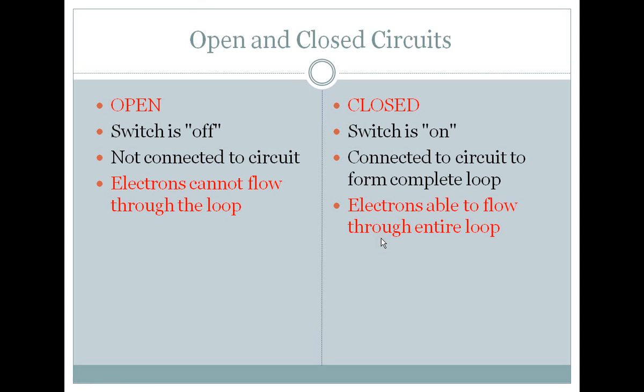So here's the difference between open and closed circuits. An open circuit is when the switch is off, so we're not connecting the circuit and electrons cannot flow through the loop - they stop. Whereas a closed circuit has the switch on, so we have connection of the entire circuit in one complete loop and electrons are able to flow through.